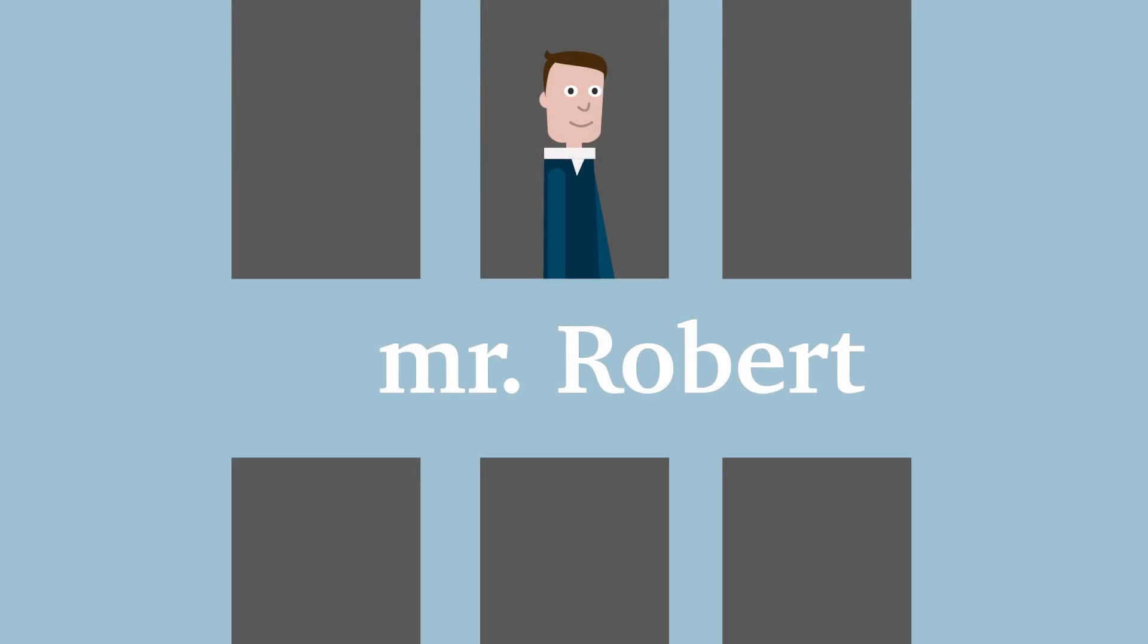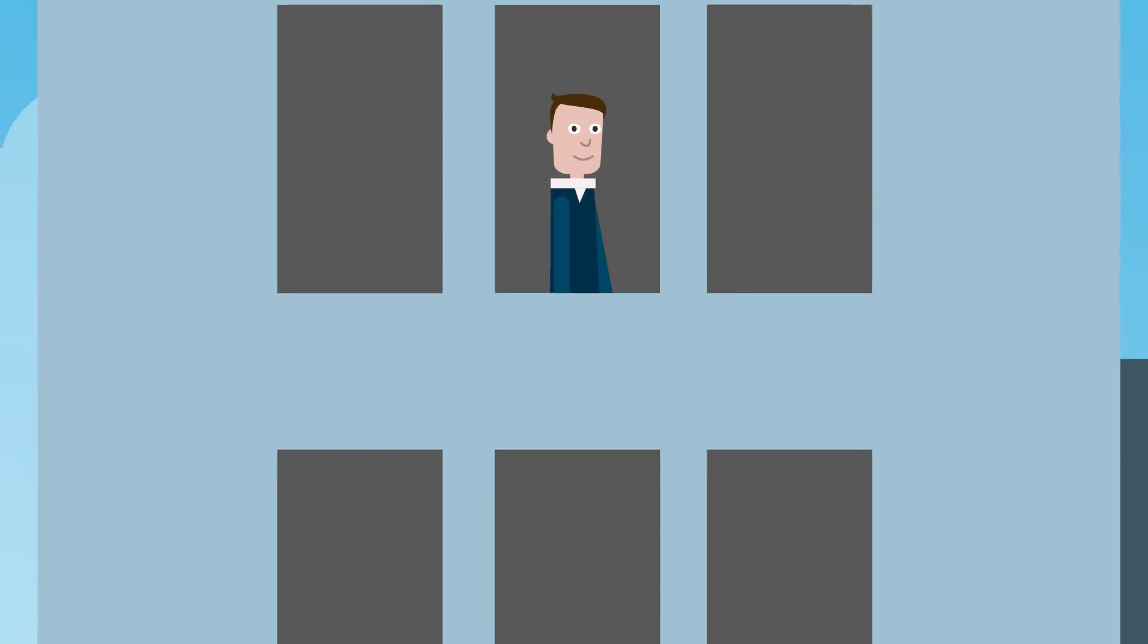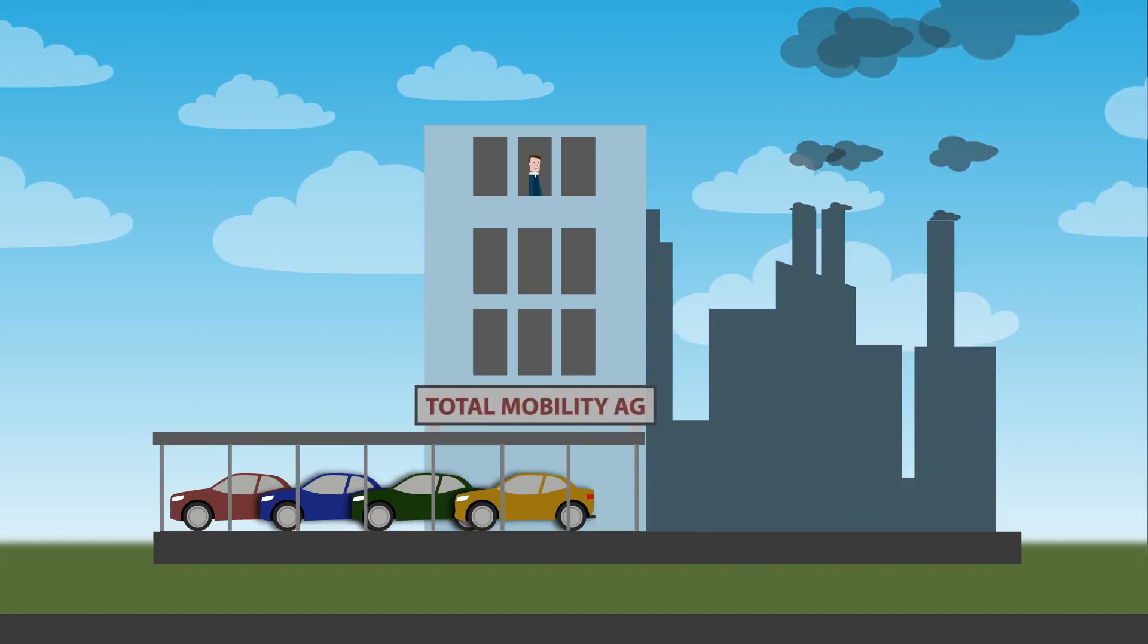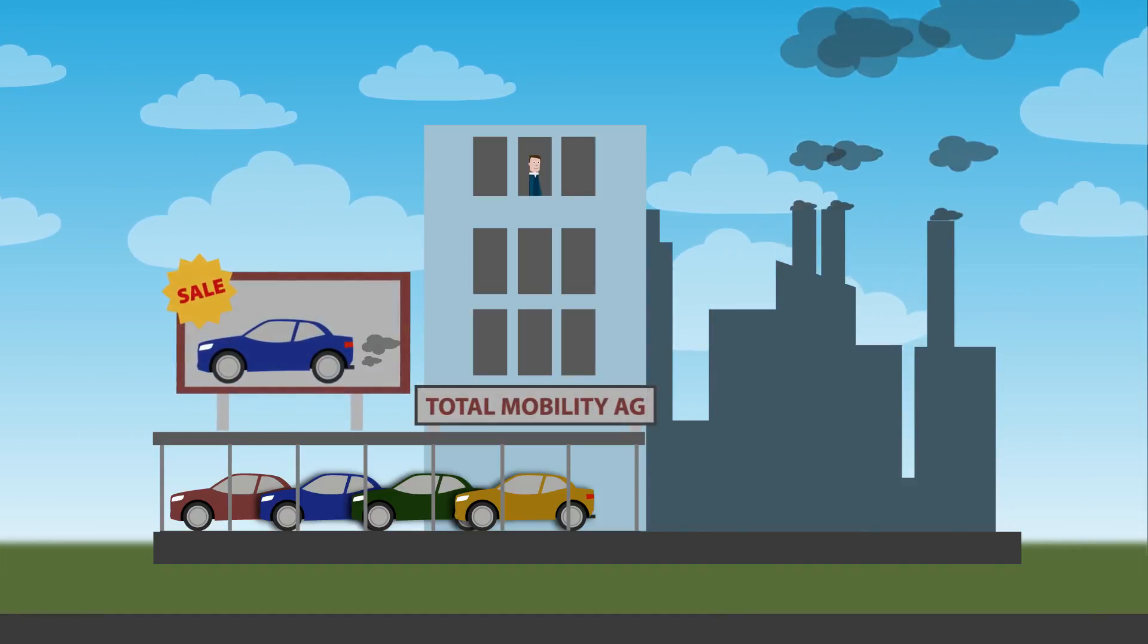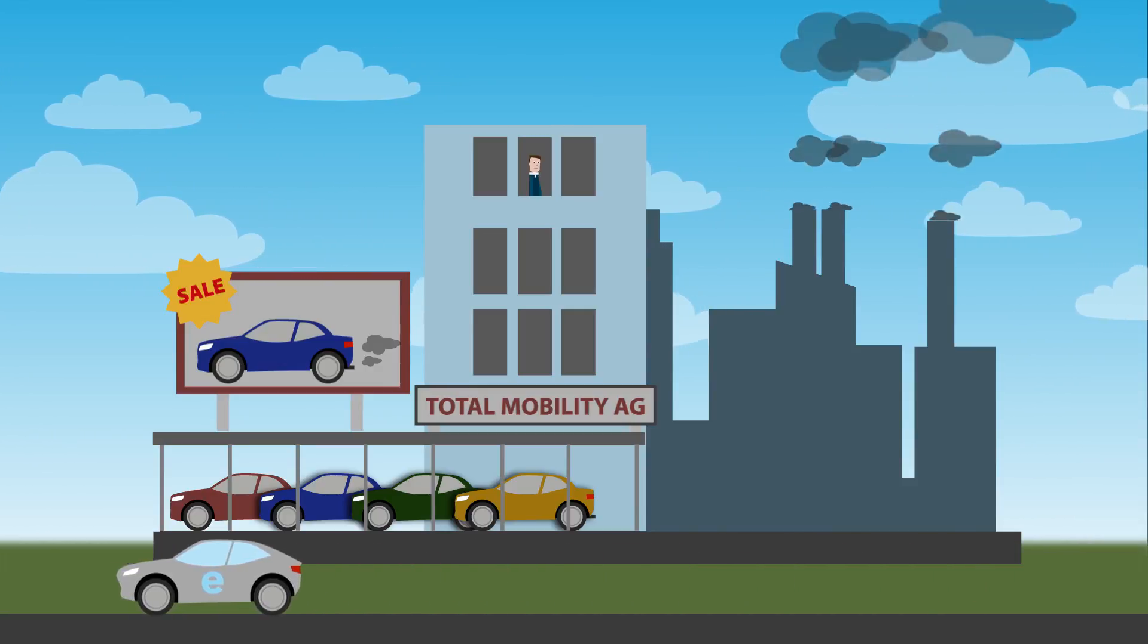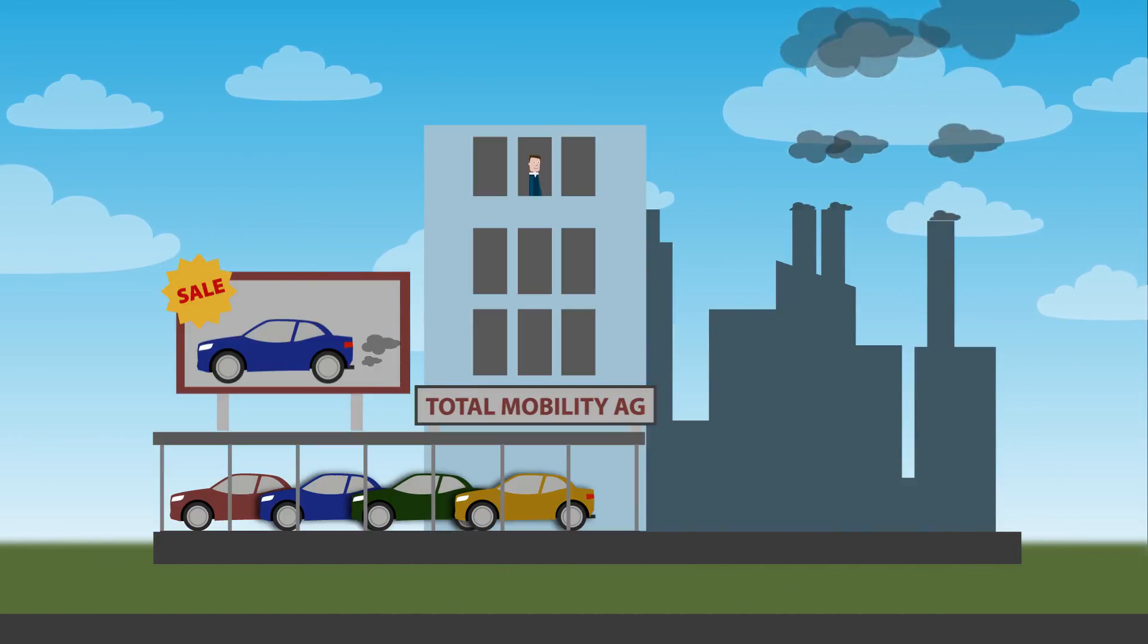Robert is the director of the successful company Total Mobility AG that manufactures excellent gasoline and diesel-powered cars. But times are changing now. He notices that there are more and more electric vehicles on the road.